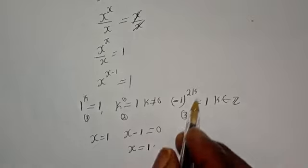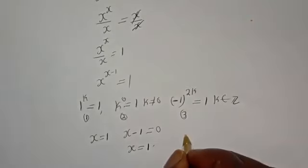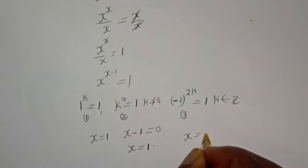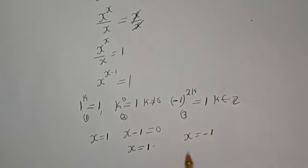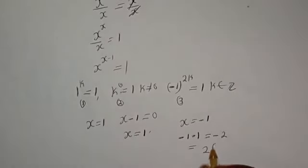And from this third rule, s is equal to minus 1. And if s is minus 1, then we have minus 1 minus 1 equals minus 2, and this equals 2 multiplied by minus 1.